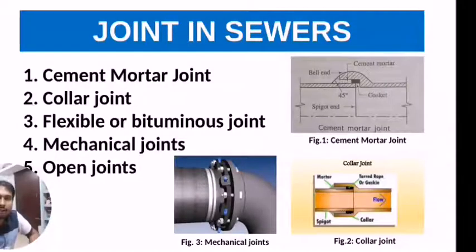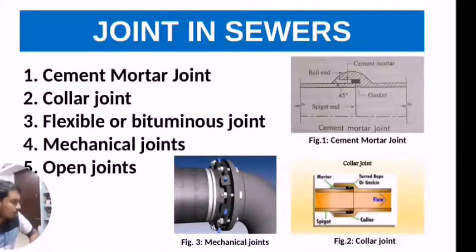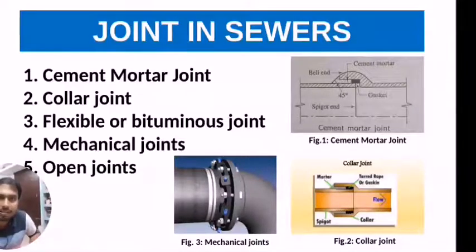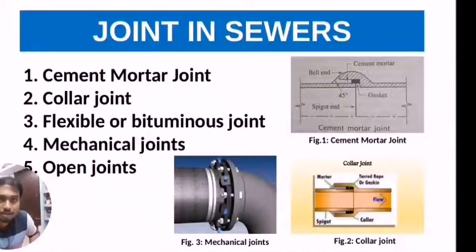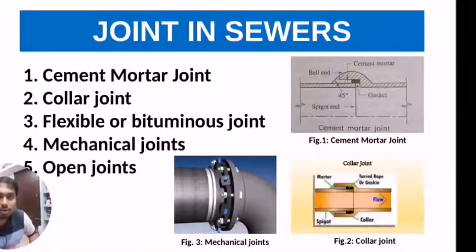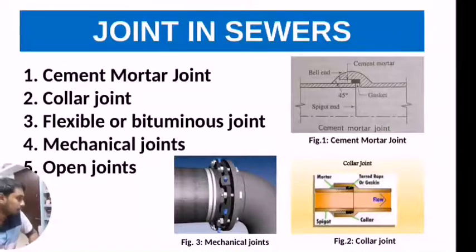Coming to joints in sewers, the types generally used are: cement mortar joint, collar joint, flexible or bituminous joint, mechanical joints, and open joints. In the cement mortar joint, cement mortar is used as a filler material between the bell end and the spigot end.